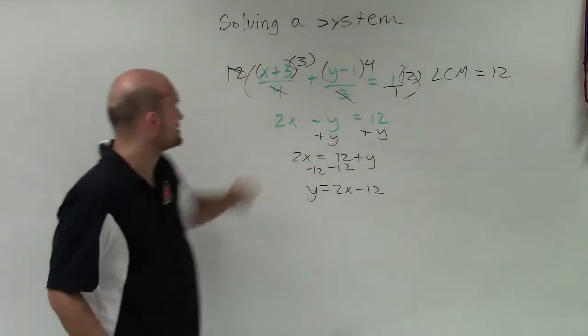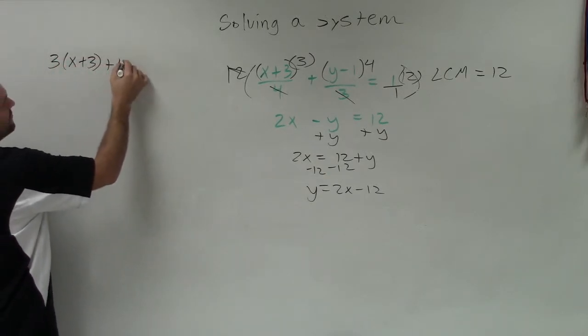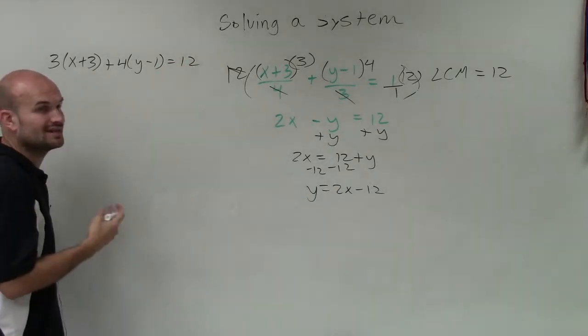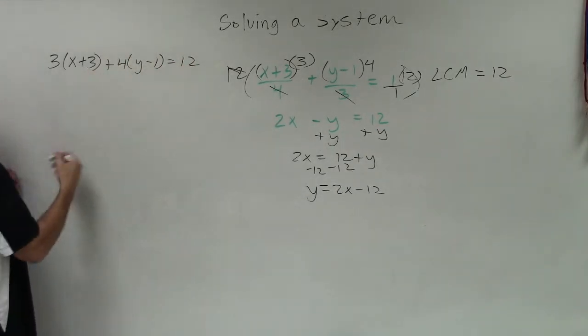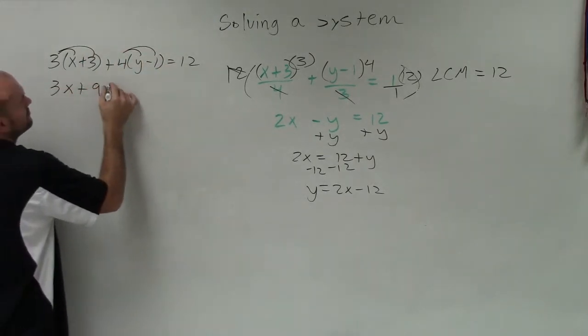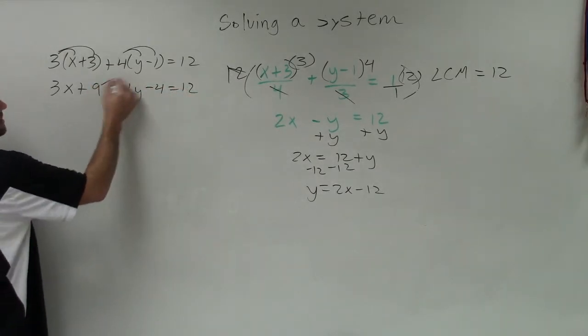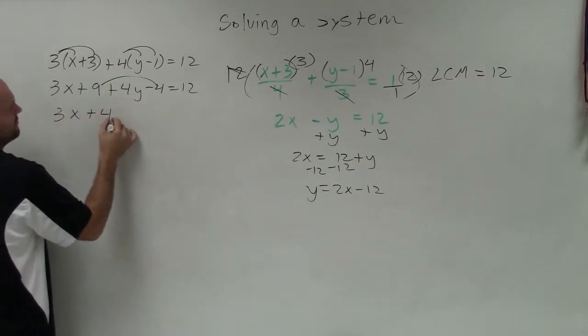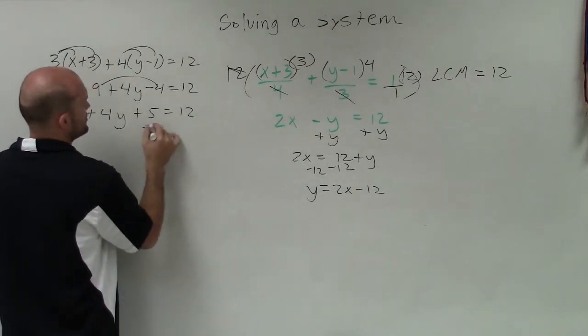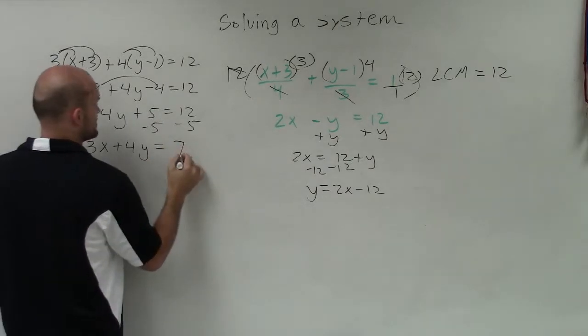So now let's go ahead and simplify this. So I had 3 times x plus 3 plus 4 times y minus 1 equals 12. I just kind of rewrote it in a nicer format. So I need to apply distributive property here. I can combine my like terms. So I have 3x plus 4y plus 5 equals 12. Subtract the 5, I get 3x plus 4y equals 7.